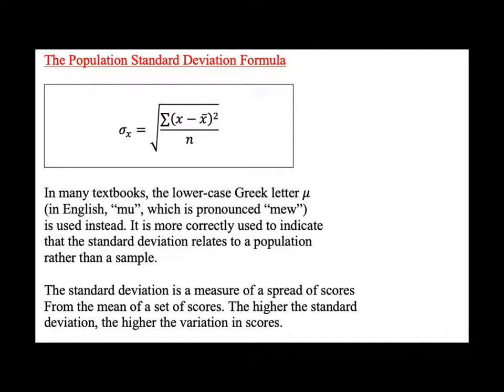One is a population and the other is a sample standard deviation. We're talking about a population standard deviation when we're considering a group as a whole. We're talking about a sample standard deviation when we're taking statistics or data scores from a larger group.